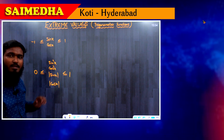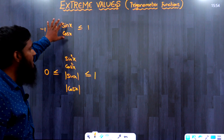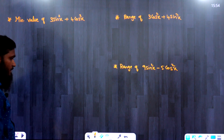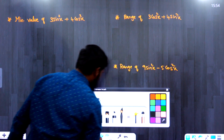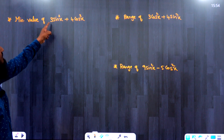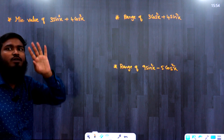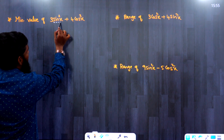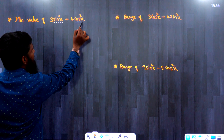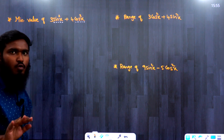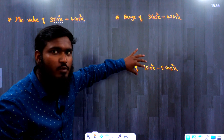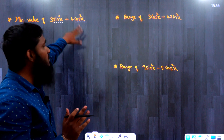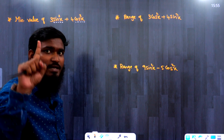In the previous video we covered related questions. Now we'll be solving some other questions. The first question: find the minimum value of 3sin²x + 4cos²x. We have values for both sin²x and cos²x, but we can't apply both at once in one question, so we first have to convert it into one function.